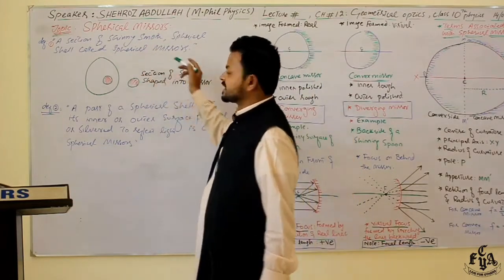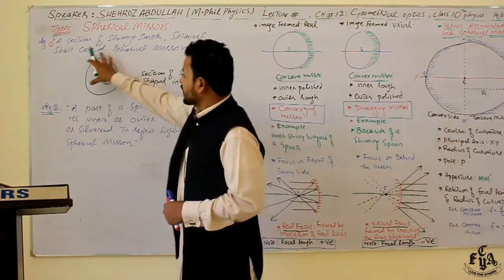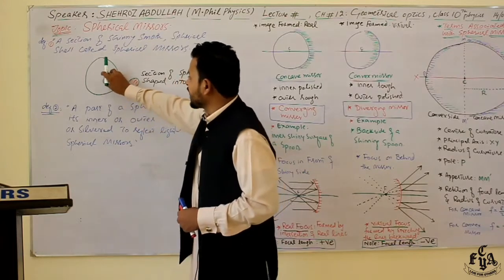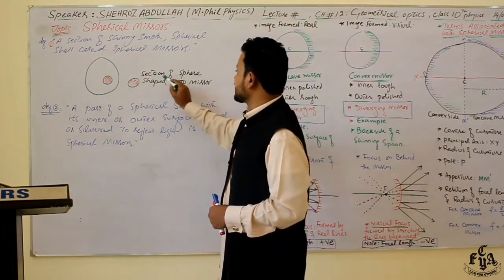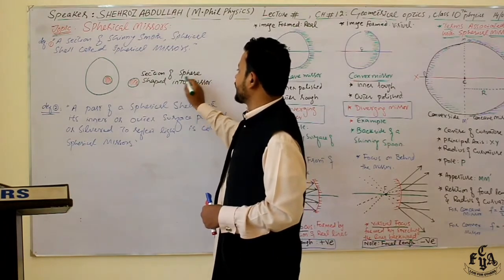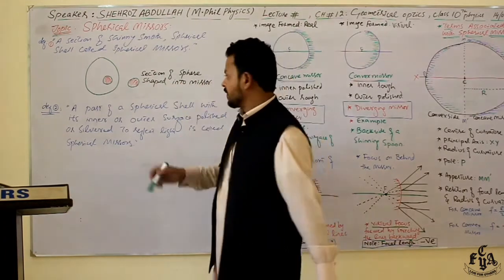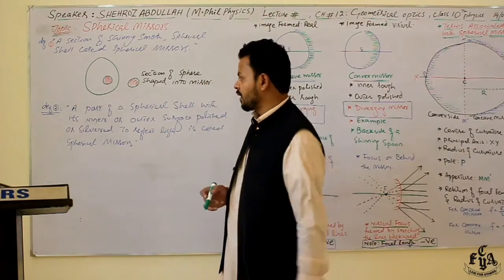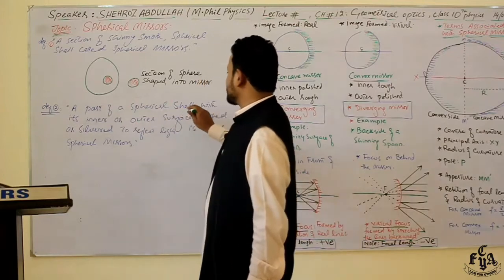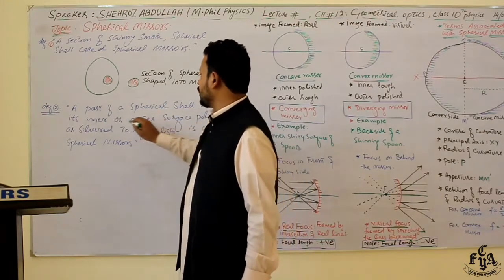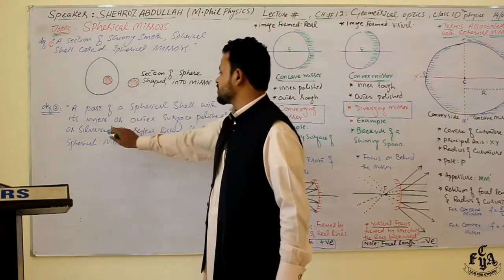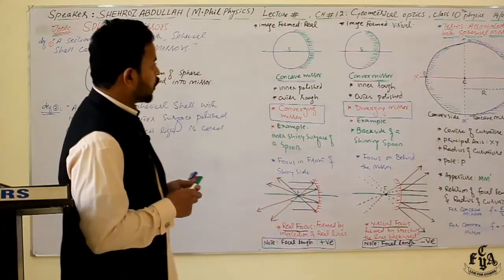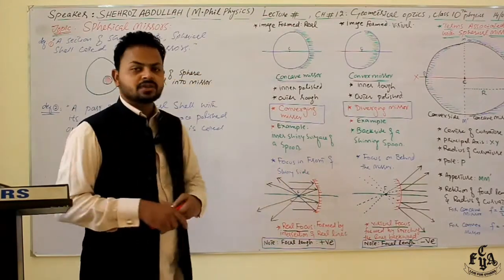For example, this is a hollow spherical shell — I have considered a small portion of it. This is the section of a small sphere shaped into a mirror. The red line shows the shiny or silvered part. We can also say that the part of a spherical shell with its inner or outer surface polished or silvered to reflect the light is known as a spherical mirror.